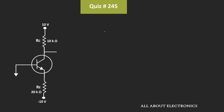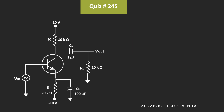That means we can say that this transconductance Gm is equal to Ic divided by Vt — that is equal to 0.465 divided by 26 mV. So that is the value of the transconductance. Once we know the value of this transconductance, let's do the AC analysis of the given circuit and find the value of the voltage gain.